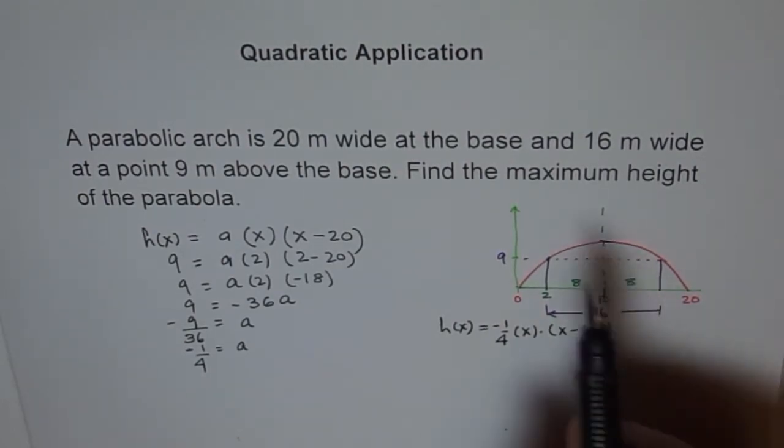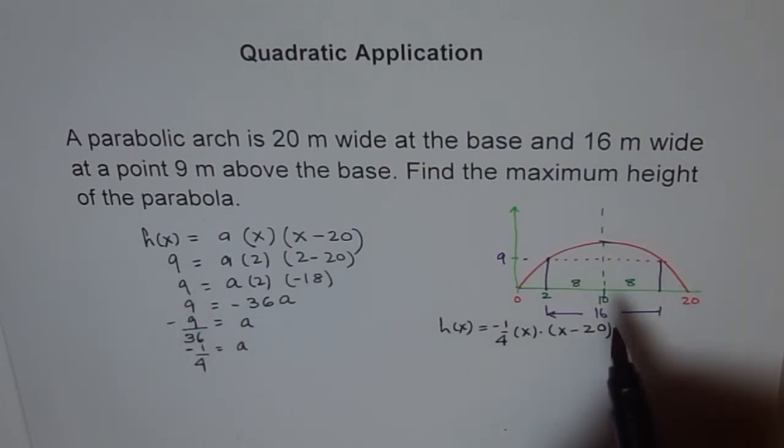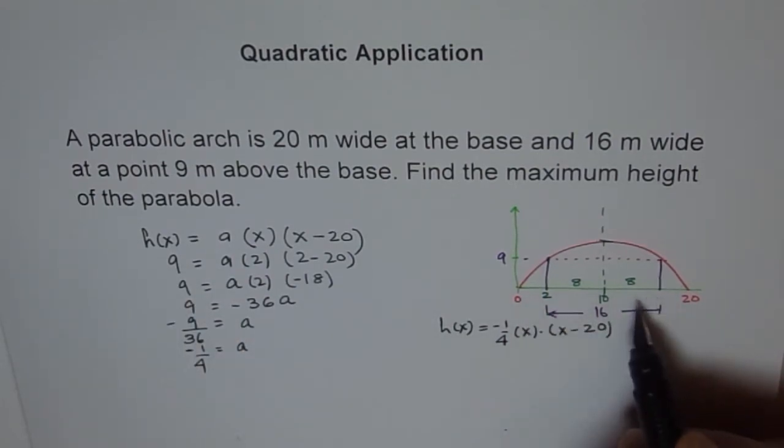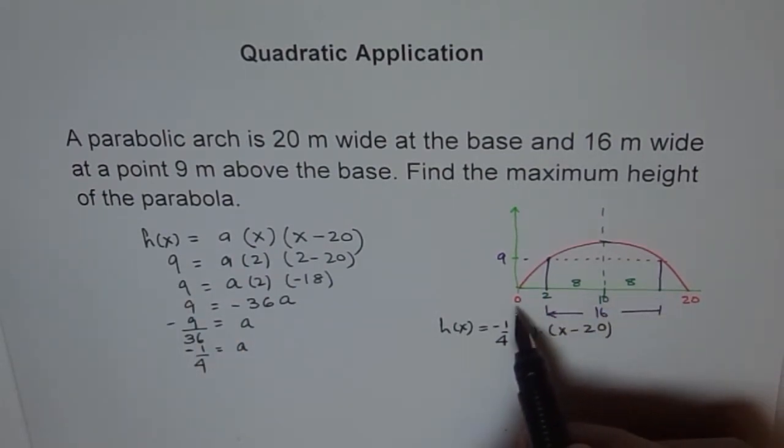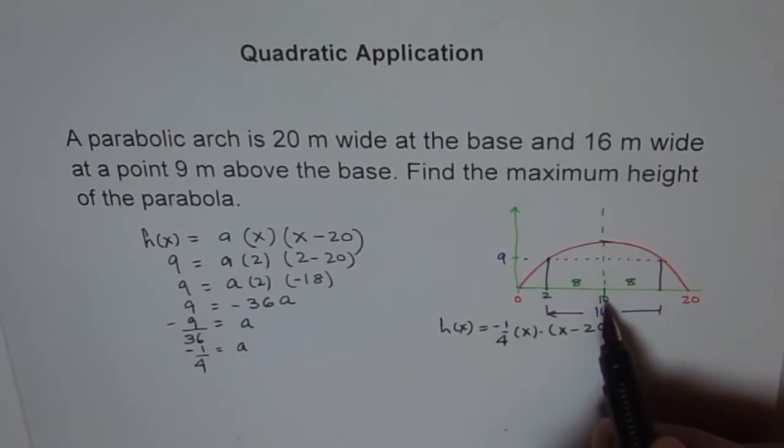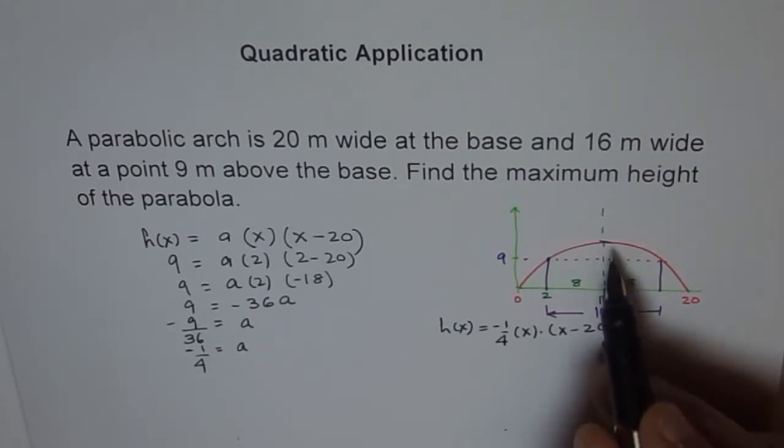Now, find the maximum height of the parabola. To find maximum height we know the center is at 10. How did we get it? 0 plus 20 divided by 2. So we got the center x axis of symmetry at 10. So maximum will be at x equals 10. So let's plug it in.